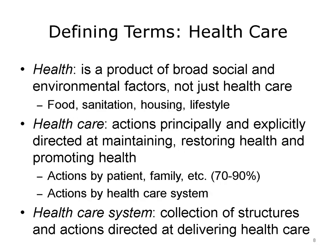Now that we understand a little more about health, disease, and illness, we can think about what we mean by health care. When we look at health in the broadest sense, it's not just the result of health care or a health care system — it's the product of broader cultural and social factors. For example, think of the effects of food, sanitation, and housing, and how these have impacted our life expectancy and quality of life in the last century or so. Furthermore, if we think of health care as actions principally and explicitly directed at maintaining or restoring health, then most health care happens outside of the health care system, with actions taken by the patient, by family members, or by caregivers constituting between 70% and 90% of the health care that people receive.